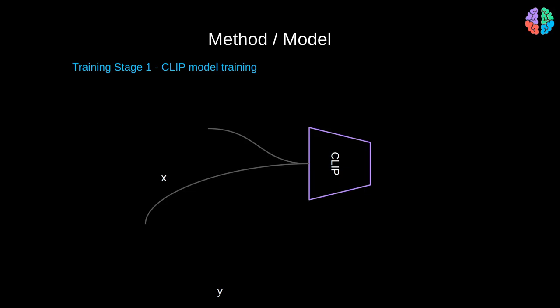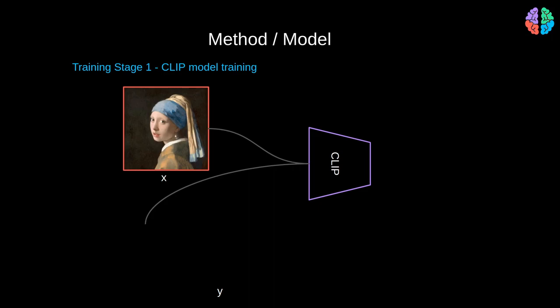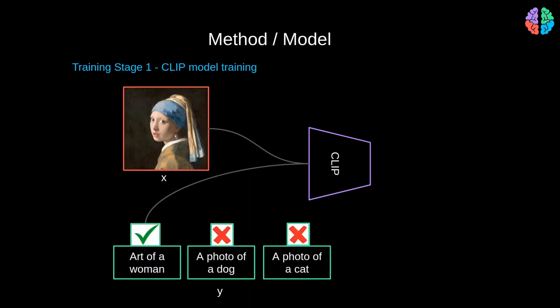Contrastive Language Image Pre-Training, also known as CLIP, learns the pairing between an input image and the text snippets such that, given an image, it predicts which one of the output in a set of thousands of randomly sampled text snippets was actually paired with the image in the dataset. It does it by learning a mapping between the input image and the corresponding text.